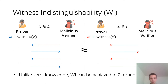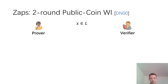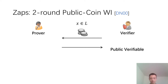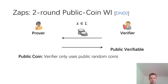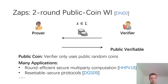Unlike the zero-knowledge property, witness indistinguishability can be achieved in only two rounds. In this work, we study ZAPs, which is a two-round public coin witness indistinguishable protocol. The verifier sends uniform random coins in the first round, the prover responds with a proof, and the proofs are publicly verifiable. The public coin property requires that the verifier only uses public random coins. This primitive is very important in cryptography — since it only has two rounds, it is used in round-efficient secure multi-party computation, and since it is publicly verifiable and the verifier's first-round message is reusable, it is also used in resettable secure protocols.